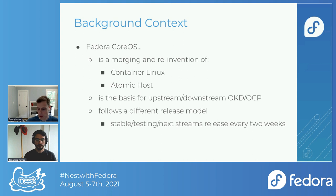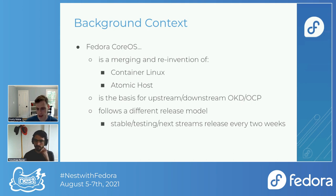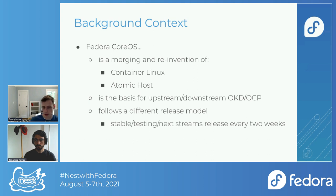Fedora CoreOS is also the basis for upstream and downstream OpenShift, which is a very fast-moving project with a lot of requirements — especially in the container runtime space. We need to constantly ship new features for upstream OKD and OCP. Fedora CoreOS also follows a different release model: we release three different streams — stable, testing, and next — every two weeks, sometimes more if security issues arise. This cadence demanded we develop custom tooling to achieve those goals.